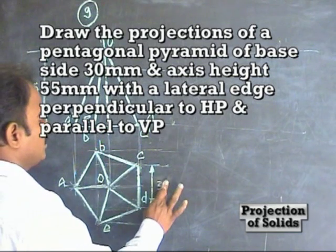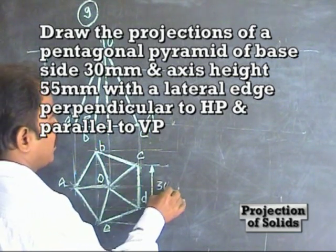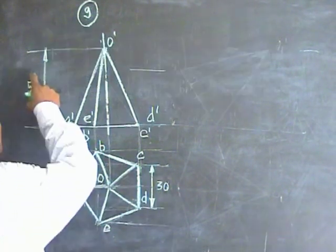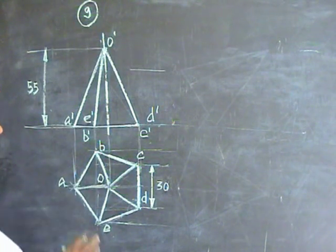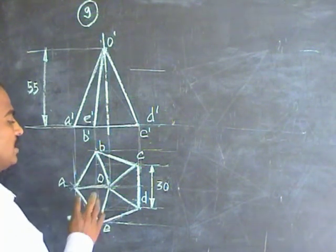Draw a 30 mm base side pentagon. The axis is 55 mm. Draw in a simple position. You have to start the top view first.